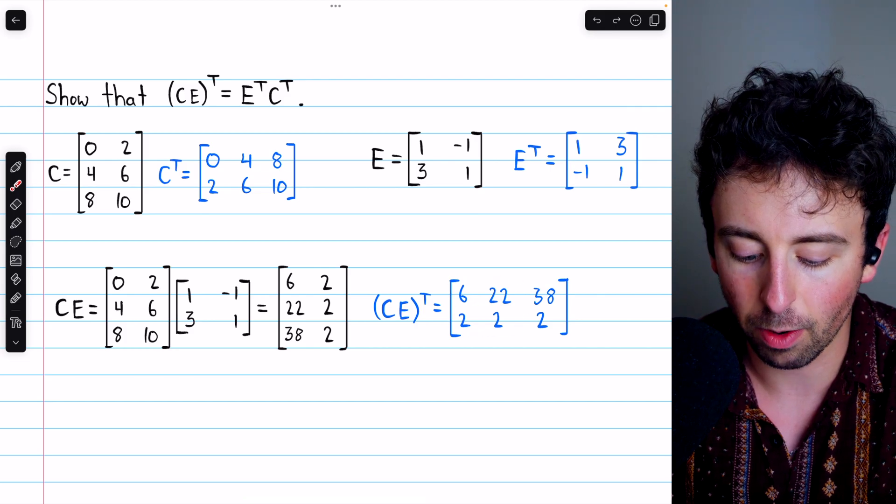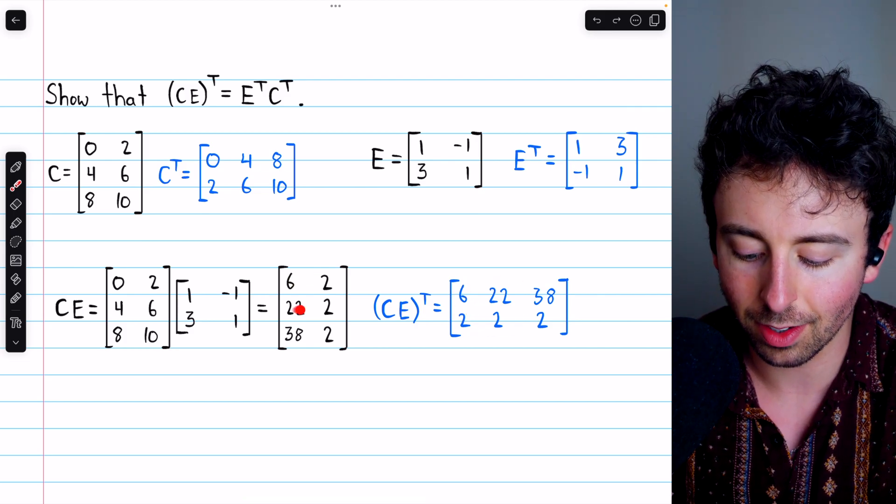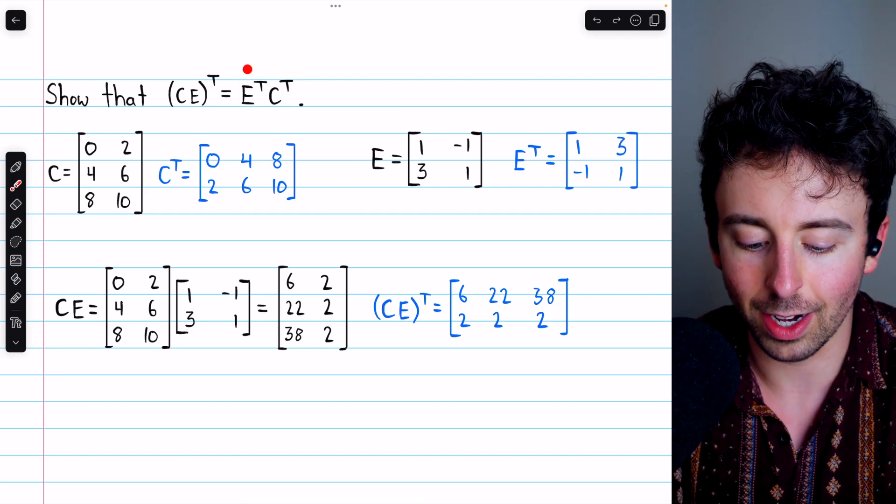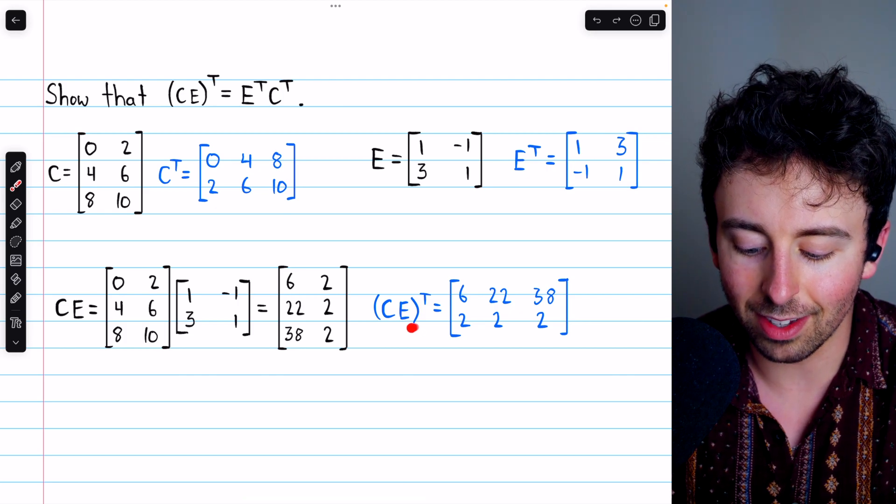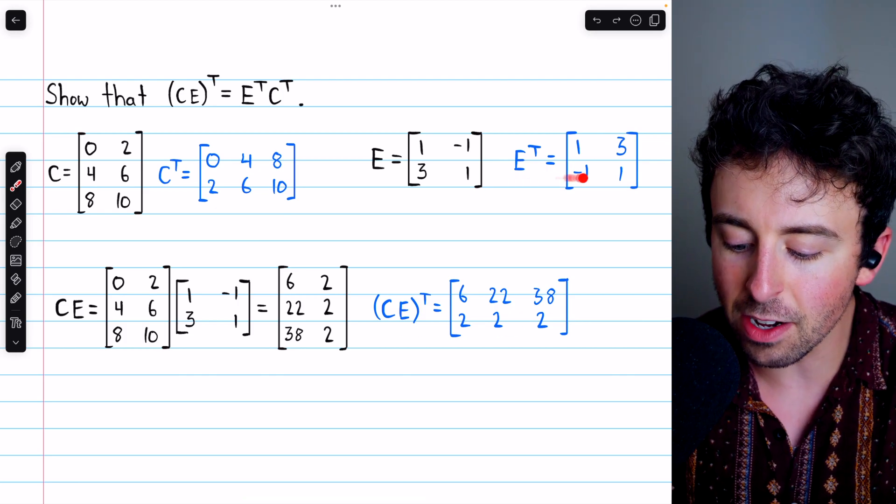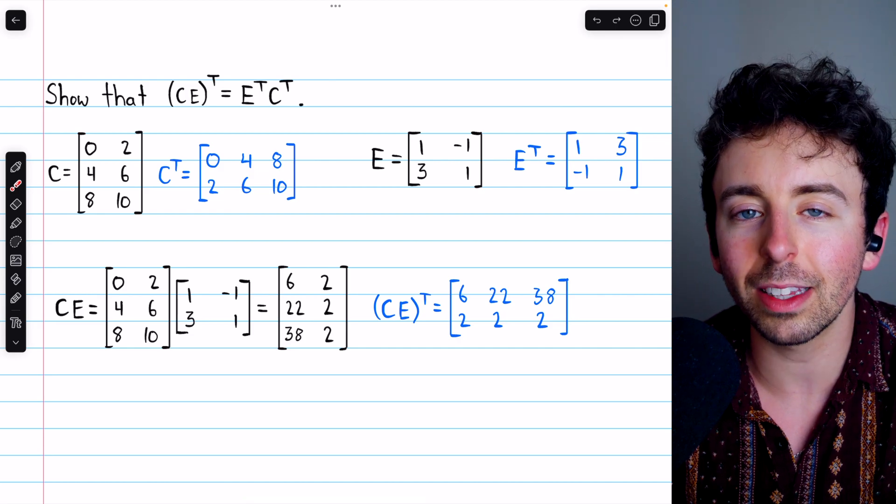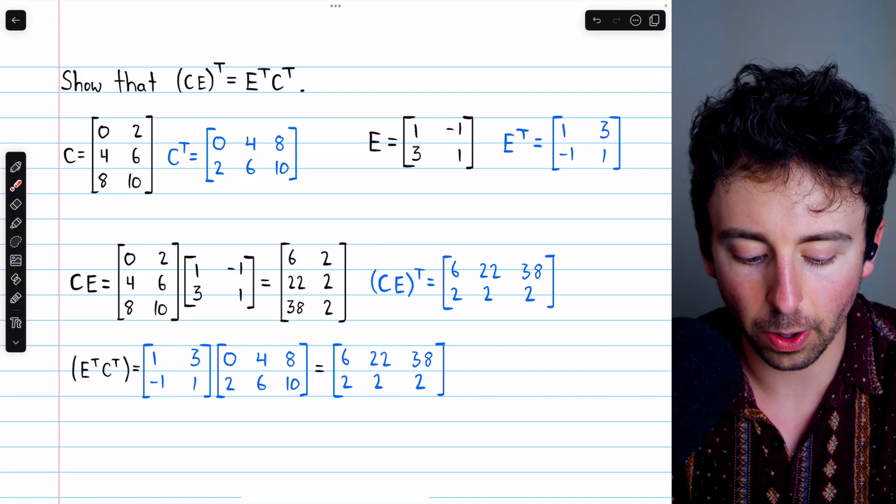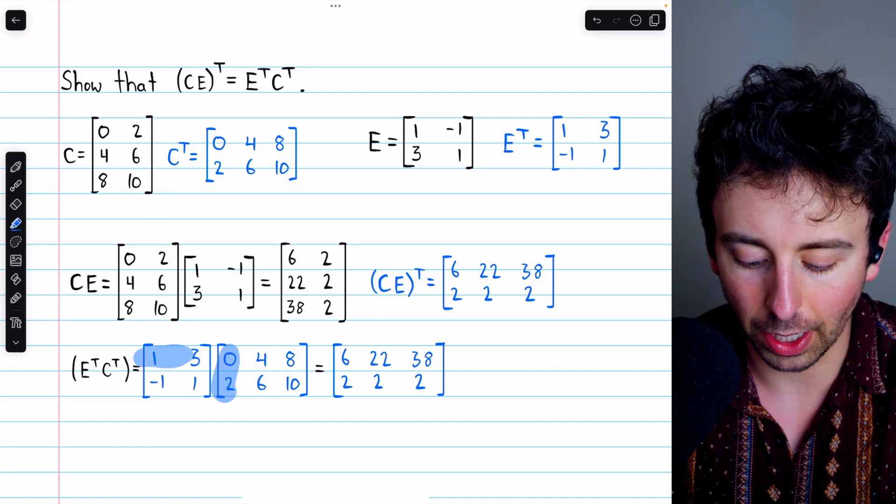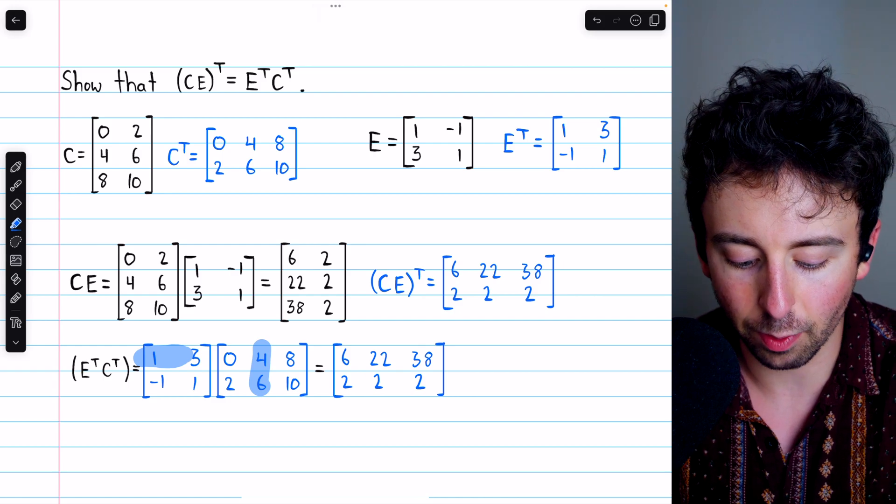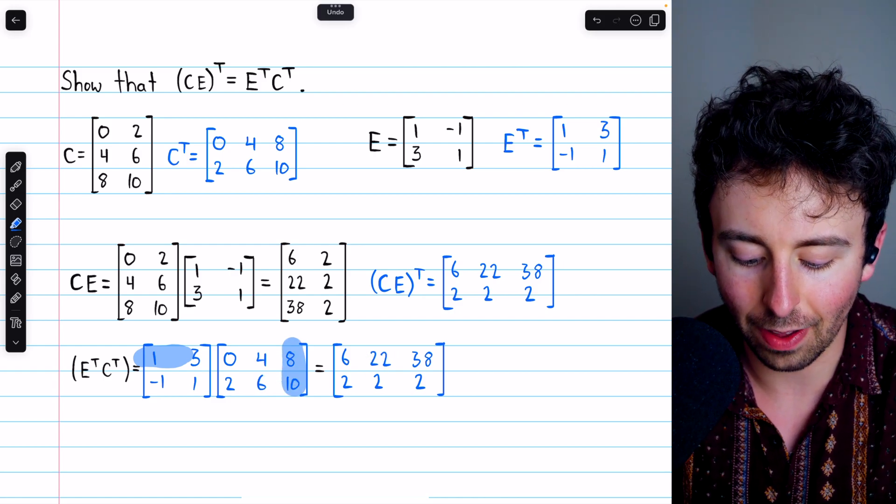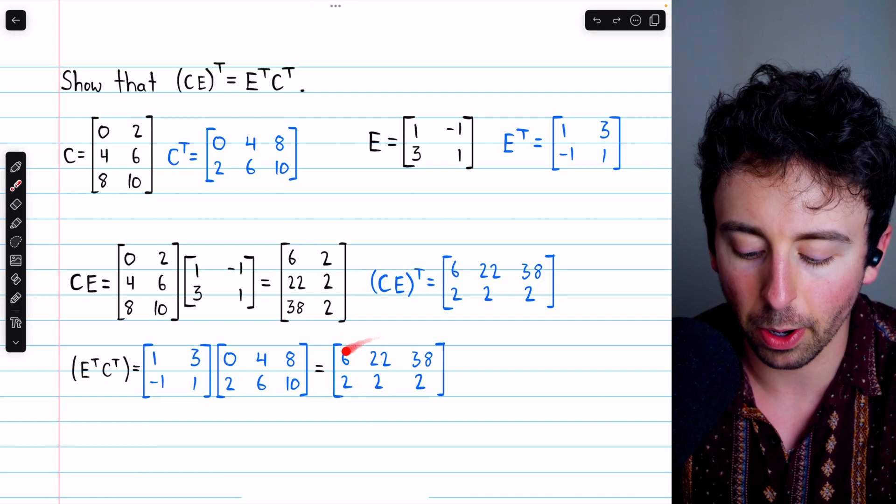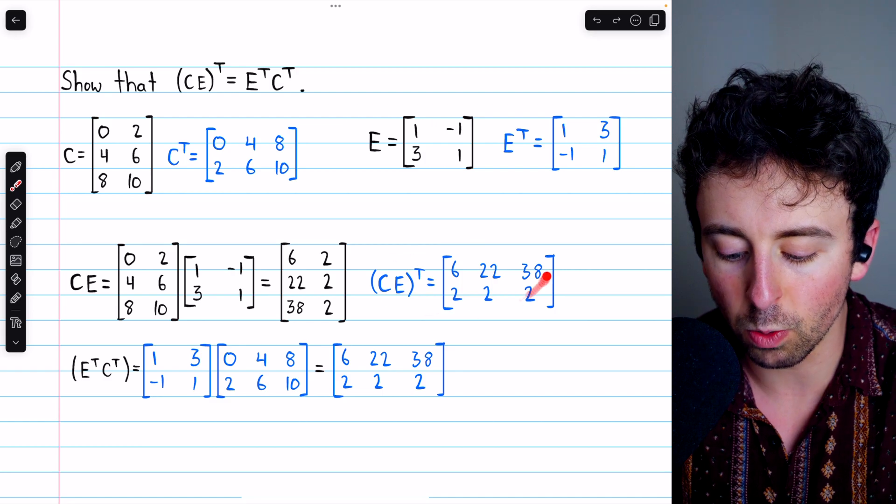CE transpose is right there. The first row, first column, second row, second column, and so on. So that's CE transpose. And based on this statement, it should be that this is the same as E transpose times C transpose. So let's do that multiplication and verify. Here is E transpose, here is C transpose, and if we do the multiplication, we would have 0 plus 6, then we would have 4 plus 18, then we would have 8 plus 30, and so on. In the end, we see that E transpose C transpose is indeed equal to CE transpose.